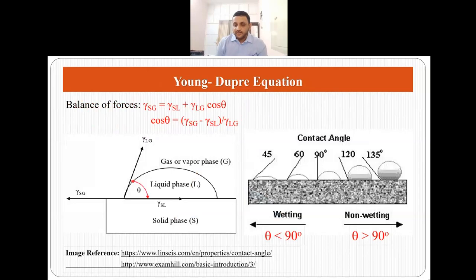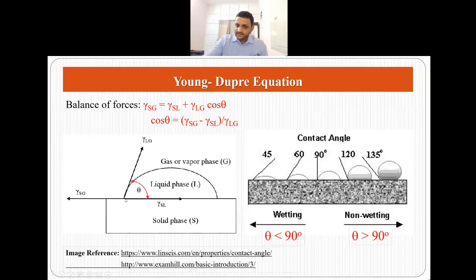To determine the value of the contact angle, we use the Young-Dupré equation. This is a balance of forces — three forces acting at a solid-liquid interface: the surface tension at the solid-gas interface, the surface tension at the liquid-gas interface, and the surface tension at the solid-liquid interface. Since there is no net force in either horizontal direction, gamma SG equals gamma SL plus the horizontal component of gamma LG, which is gamma LG cos theta. From this Young-Dupré equation we can figure out the value of the contact angle.